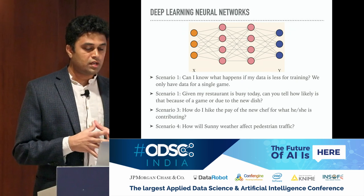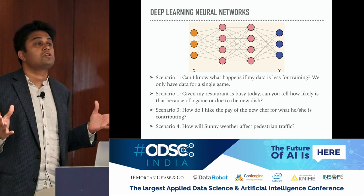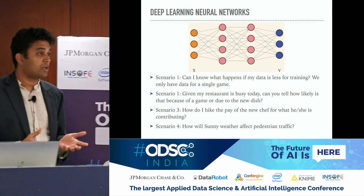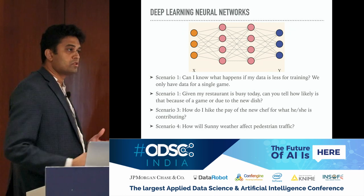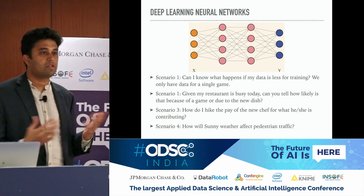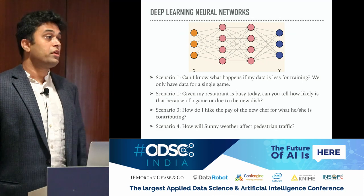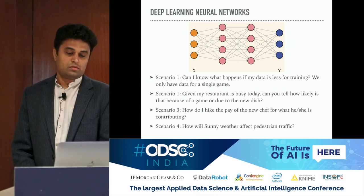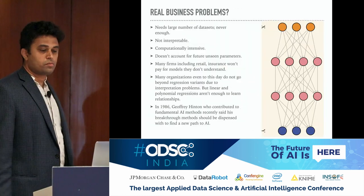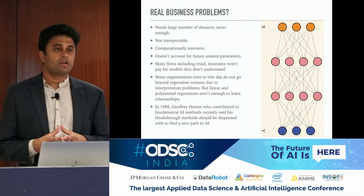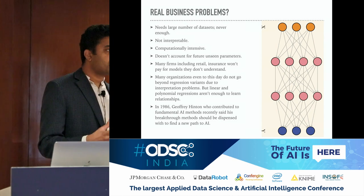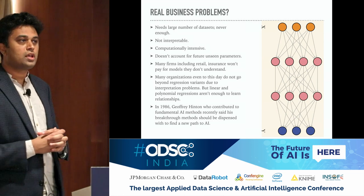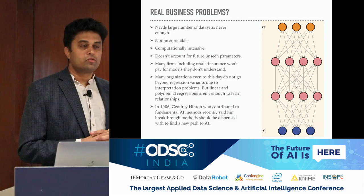If it is busy today, how likely is it because of the game versus the new dish? It may not be due to the new dish — perhaps a game was happening and people wanted to go to a nearby restaurant while hungry. And how would you hike the pay of the new chef? He or she will demand more, saying it is because of my dish everybody is coming. What about weather — suppose it is raining in monsoon season, not everybody wants to go out. These are real business problems: you need large numbers of data sets. It is never enough, and models are not always interpretable.